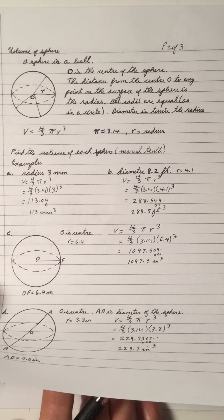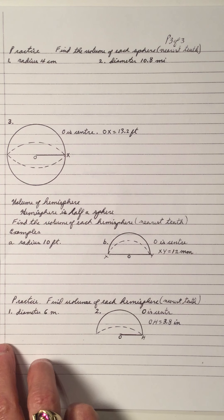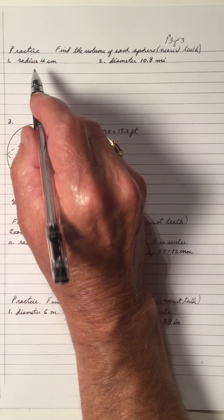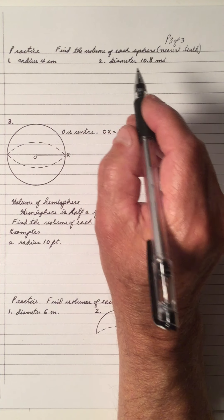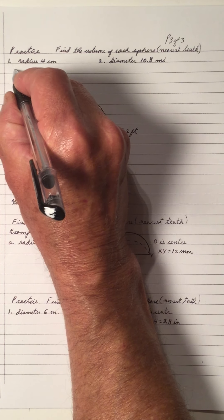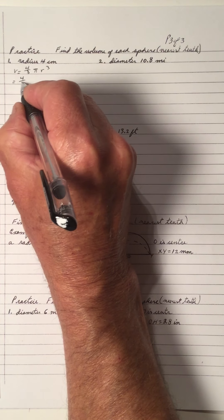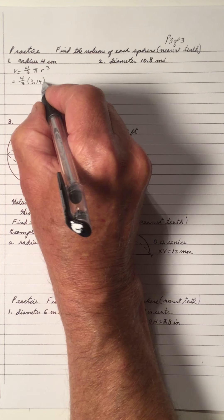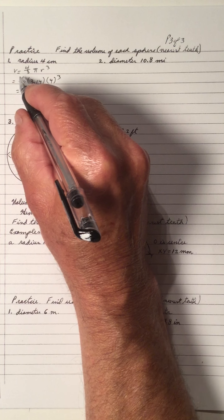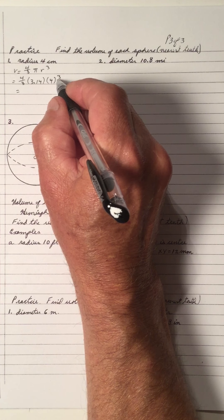So those were some worked examples. Again, you have to practice, making sure you're okay. Now we have a practice page — practice means you work them out to see if you get the right answer. Pause the video, work out each one, then play it back. Find the volume of each sphere to the nearest tenth. The radius is 4, so the volume formula is 4 over 3 pi R cubed. That's 4 over 3 times 3.14, and the radius is 4, so it's 4 cubed. When you plug it into the calculator, 4 divided by 3 times 3.14 times 4 to the power of 3.